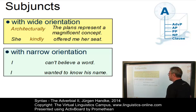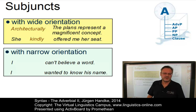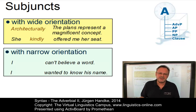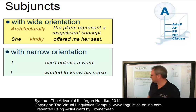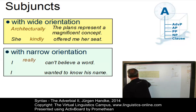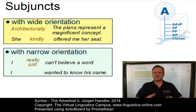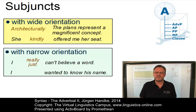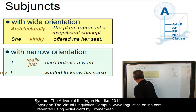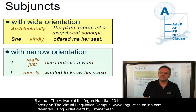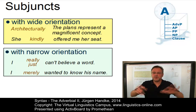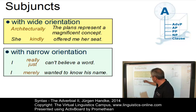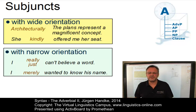Then we have subjuncts with narrow orientation, which are chiefly related to the predication or to particular parts of the predication. For example, we have emphasizers such as 'I really can't believe a word' or 'I just can't believe a word.' We have intensifiers such as 'They fully appreciate the problem.' Or we have focusing subjuncts such as 'I merely wanted to know his name — I didn't want to know anything else.' So there are several subclasses of subjuncts with narrow orientation.